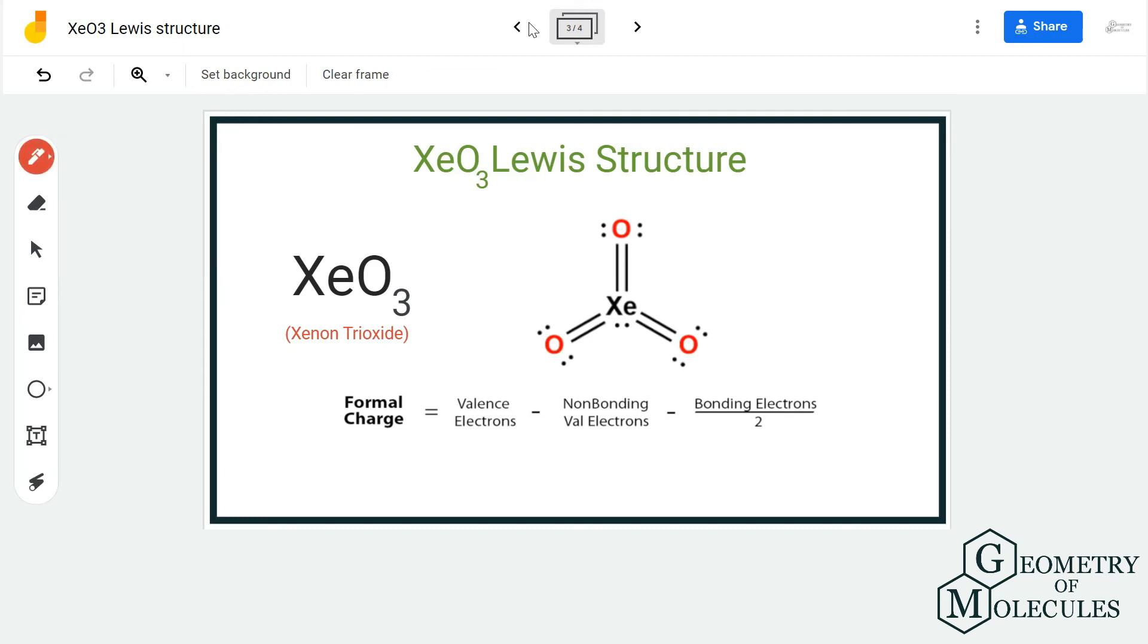Now oxygen has six valence electrons, out of which four are non-bonding and four are bonding, giving it a total charge of zero. Xenon has eight valence electrons; there are two non-bonding electrons and twelve bonding electrons, which gives us a total charge of zero. So here, all these atoms have a formal charge of zero,